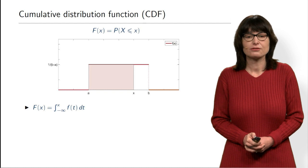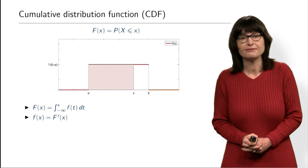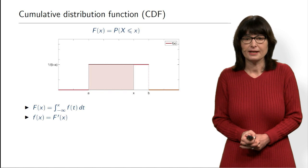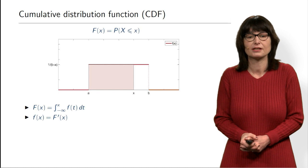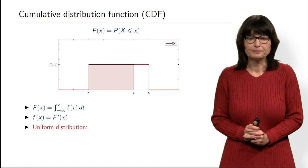For a uniform distribution with X between A and B, the probability that X ≤ x is the pink-shaded area in the picture — which is exactly the value of the cumulative distribution function. This also means, from calculus, that the density is the derivative of the CDF — if you differentiate the integral up to x, you get the integrand evaluated at x.